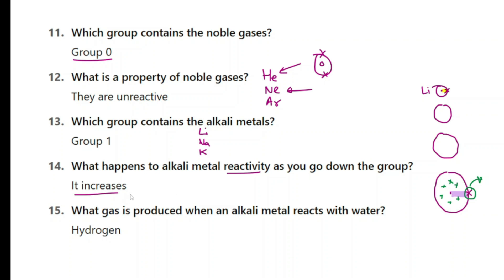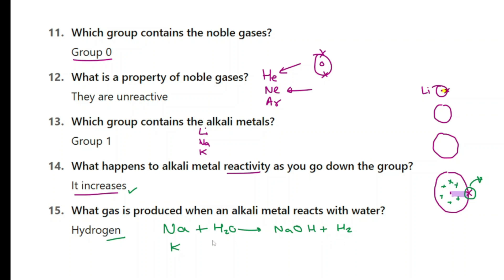What gas is produced when an alkali metal reacts with water? The answer is hydrogen gas. For example, sodium reacts with water to produce sodium hydroxide plus hydrogen. If you put lithium or potassium, same thing — potassium plus water gives potassium hydroxide plus hydrogen. So the answer is hydrogen.